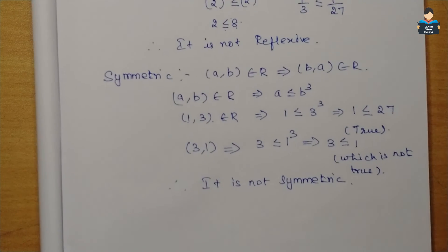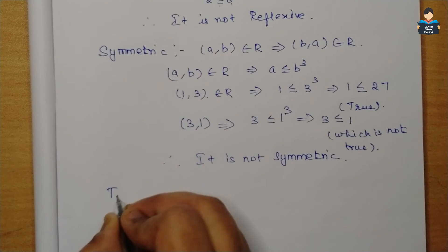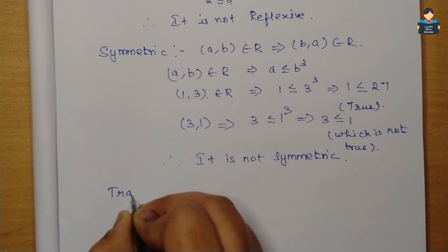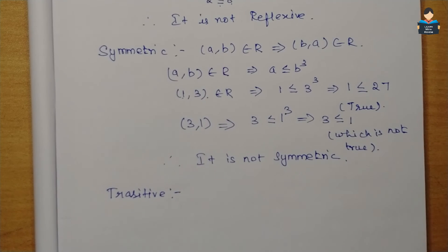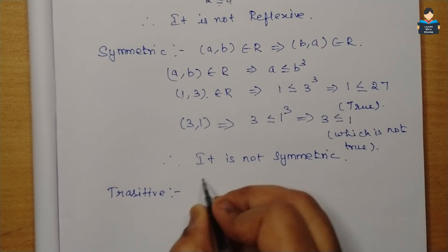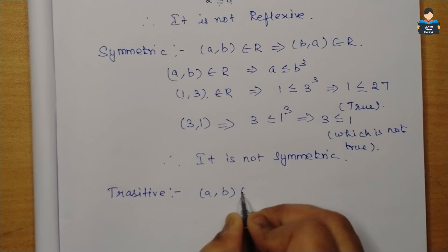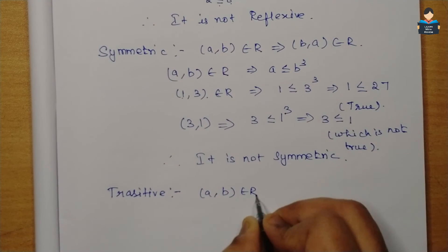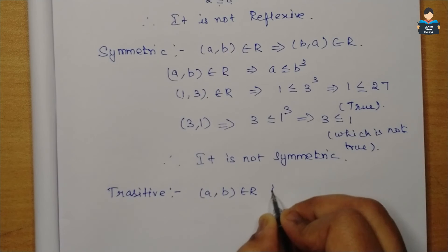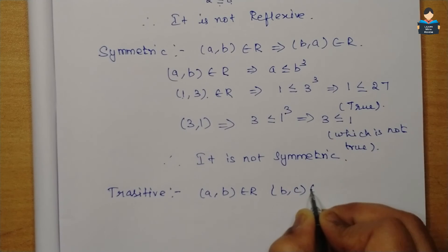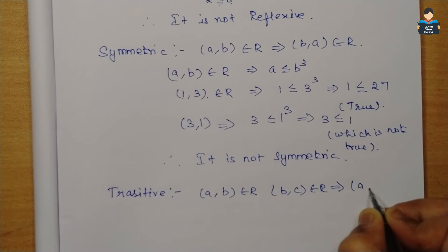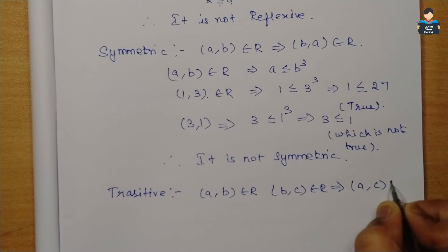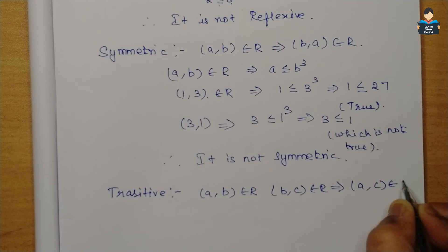Next, check transitive. Transitive condition: if (a,b) belongs to R and (b,c) belongs to R, this implies (a,c) should also belong to R.